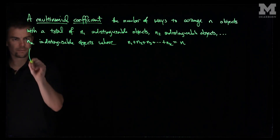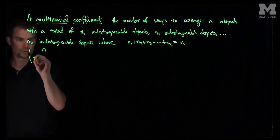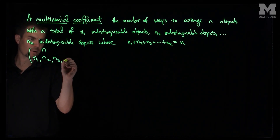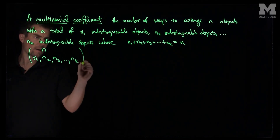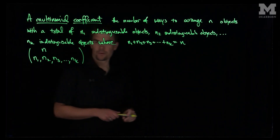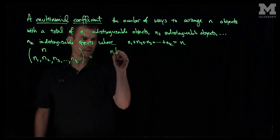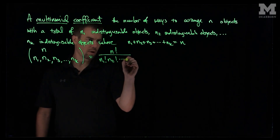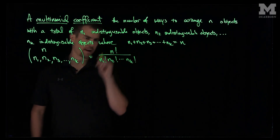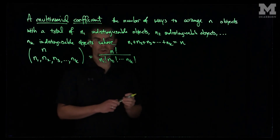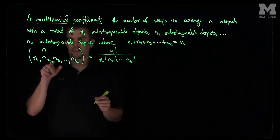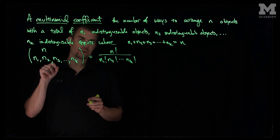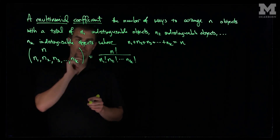We write this as n choose n1, n2, n3, all the way up to nk. And this equals n factorial over n1 factorial, n2 factorial, all the way up to nk factorial. So this multinomial coefficient gives the number of ways to arrange n things, where there are n1 of one indistinguishable class, n2 of another, all the way up to nk.